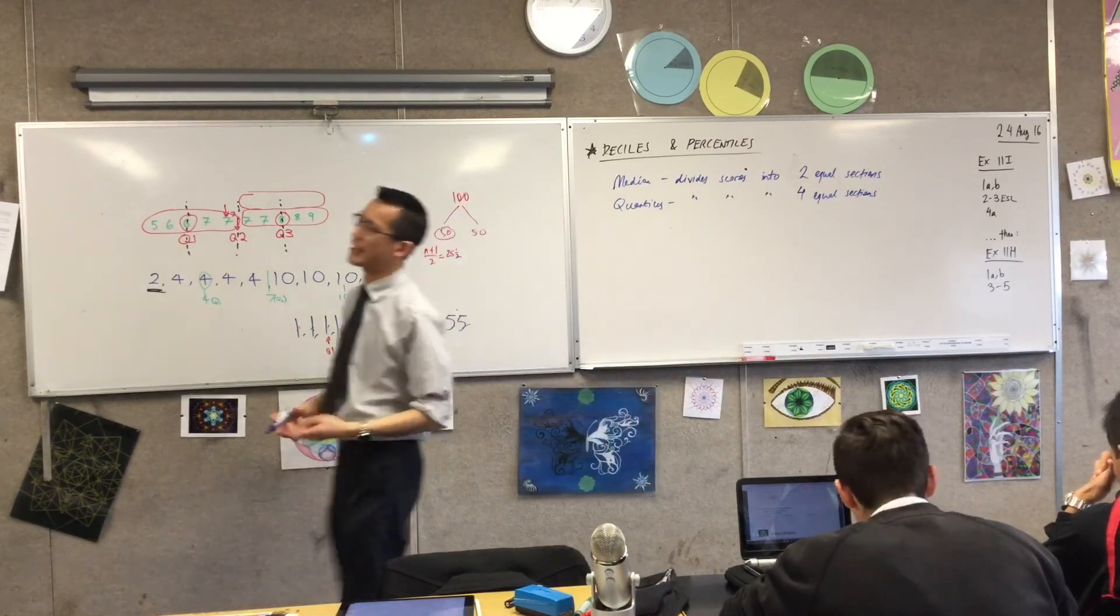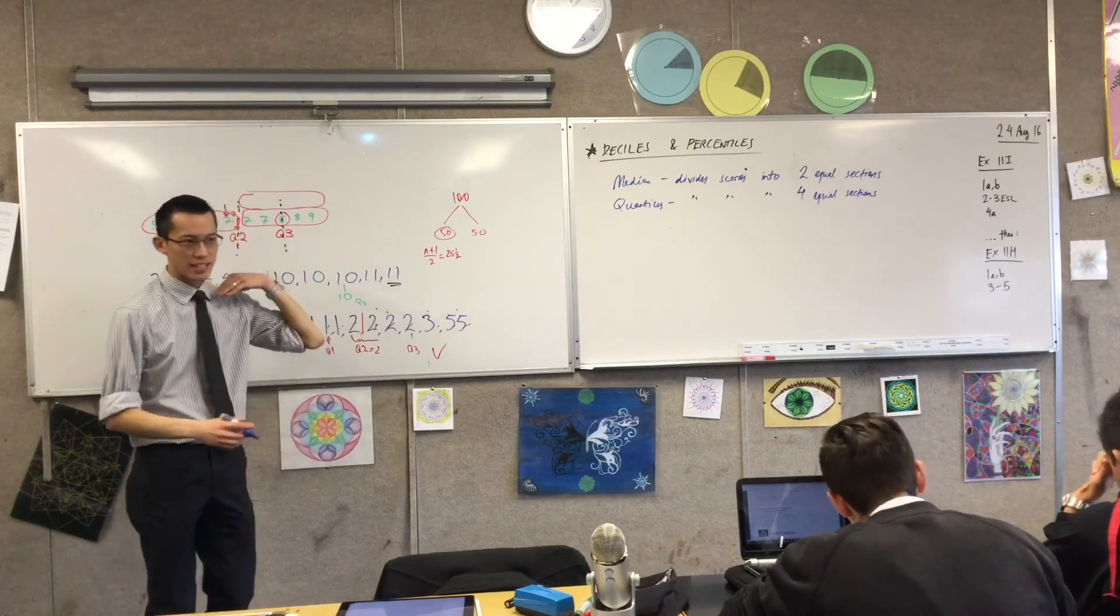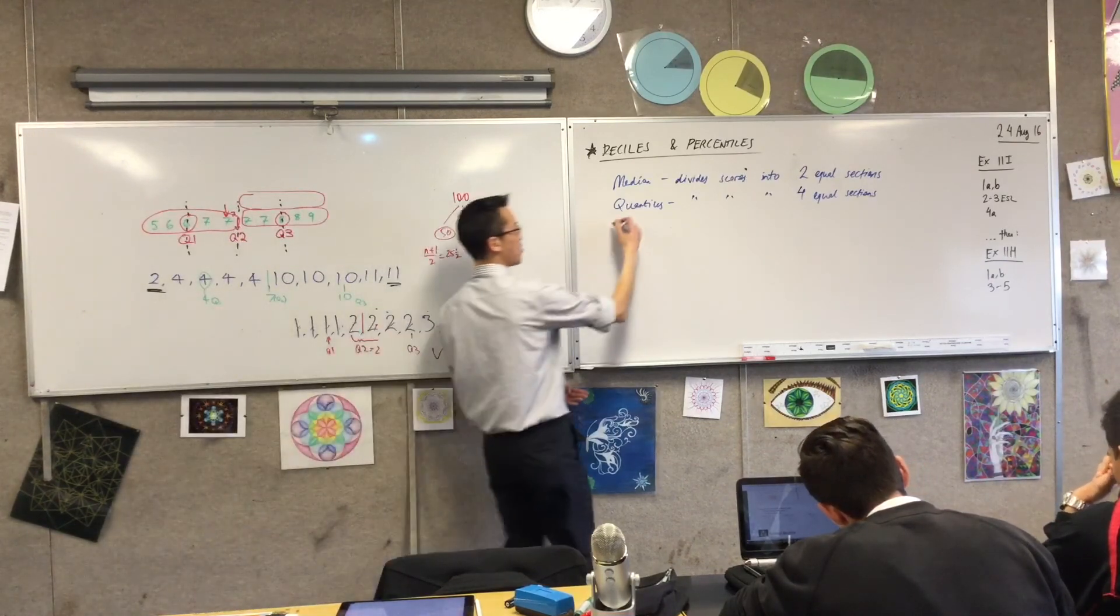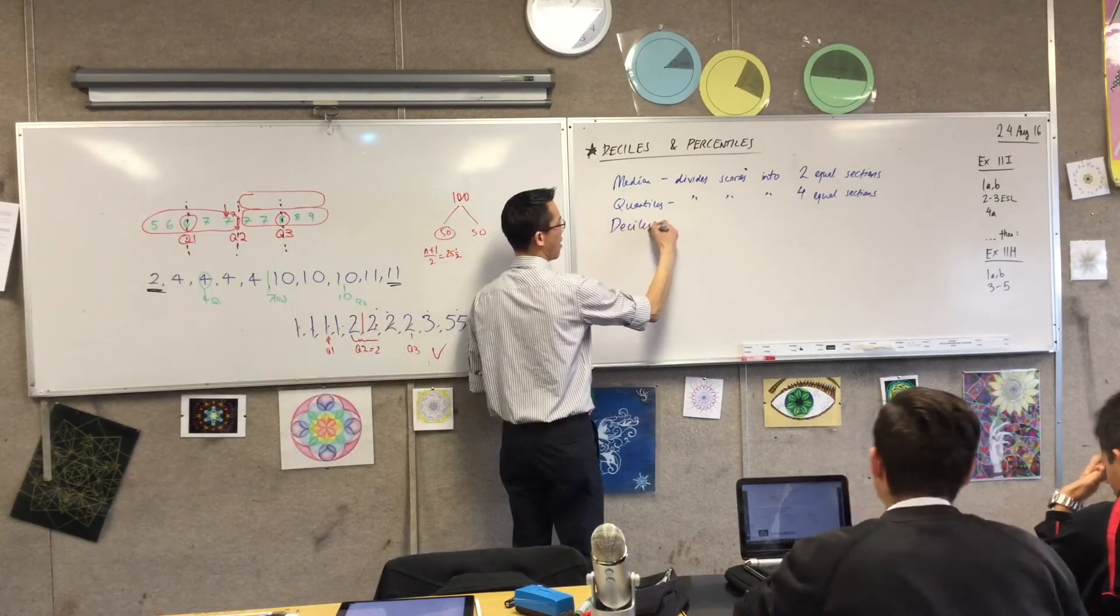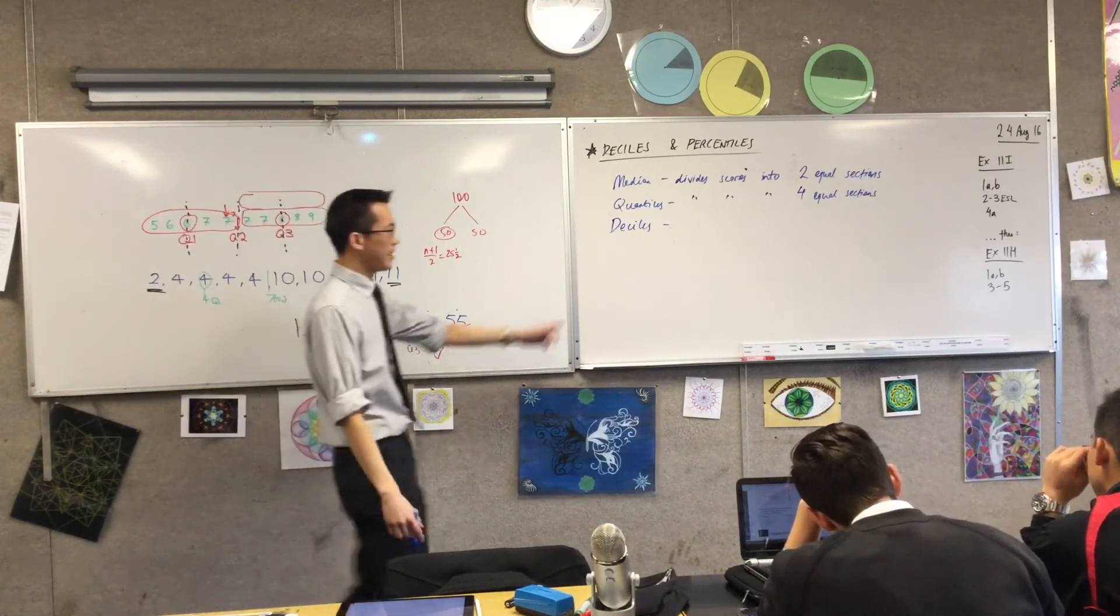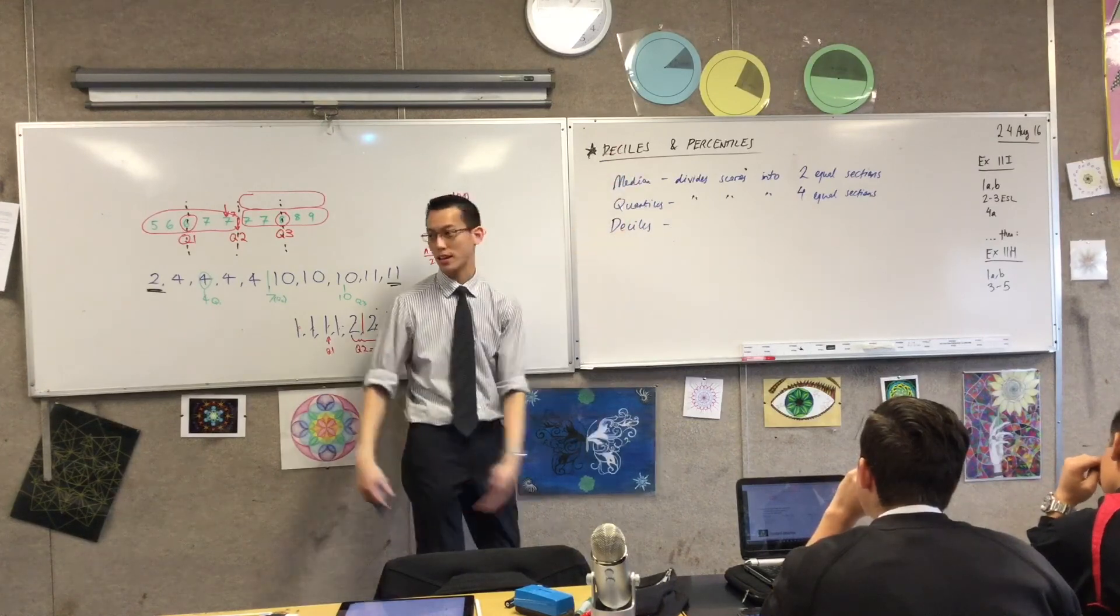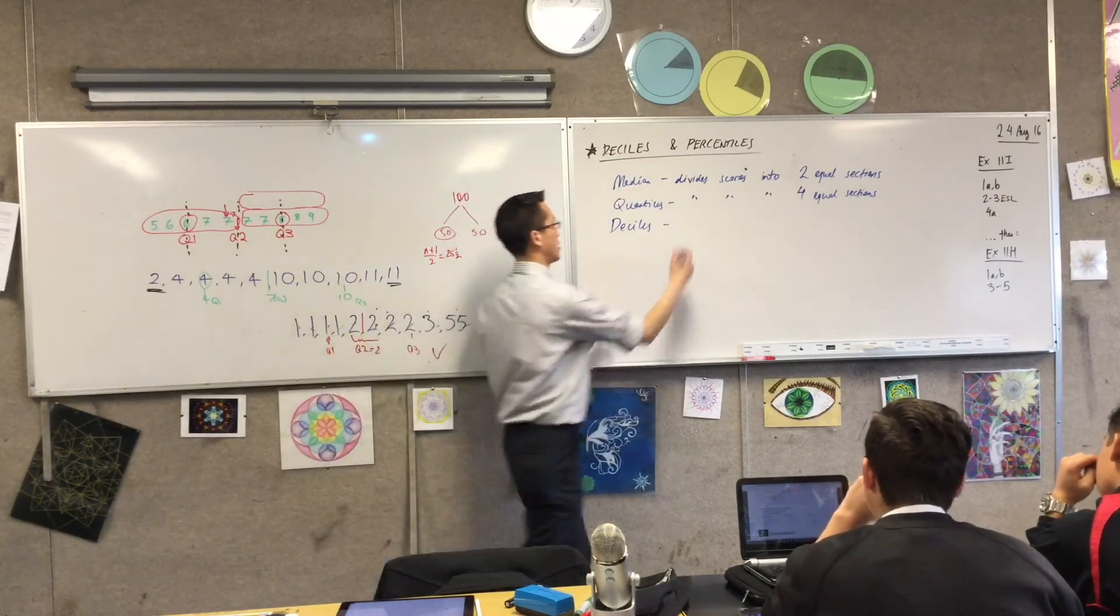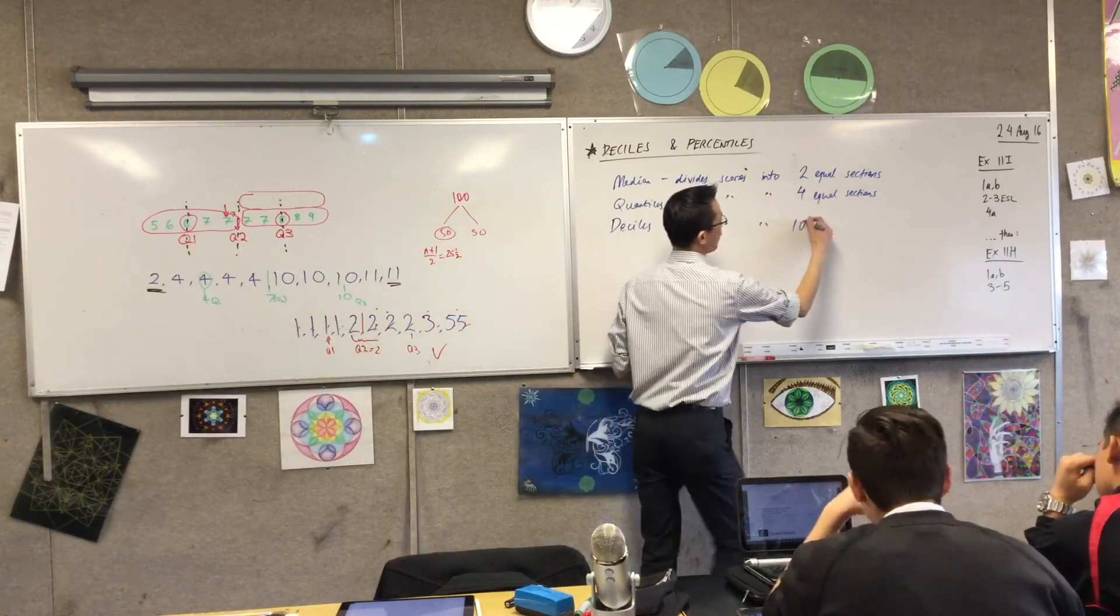Now therefore, you can sort of guess by the name, if you then extended this again, and said, well, what if I want a finer division of my set of data? Deciles is not two equal sections, or four equal sections, but ten equal sections.